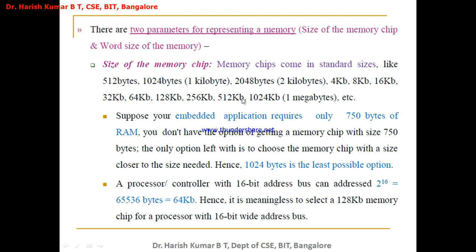Suppose I am designing an embedded system currently and I computed and estimated that it requires 750 bytes of memory. Now I don't find a memory with exactly 750 bytes. I should go for using a memory which closely matches — the memory which is higher and very close to 750 bytes is 1024 bytes, which is the least possible one, so I have to go for using it.